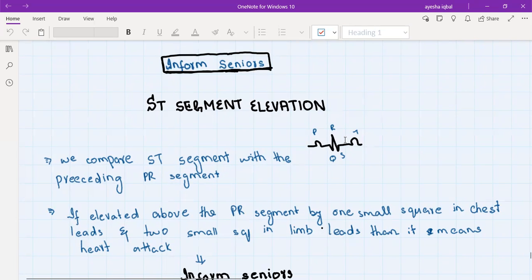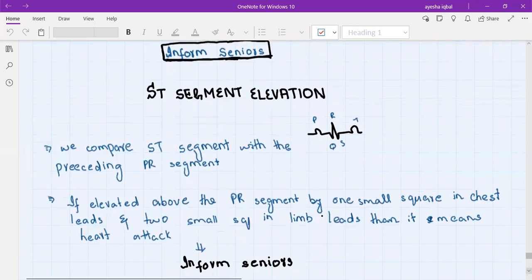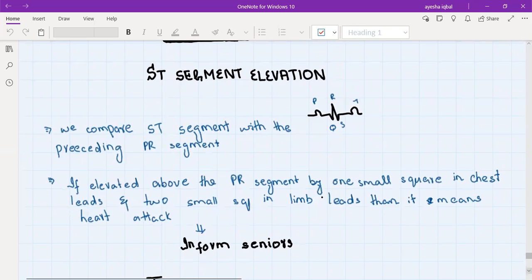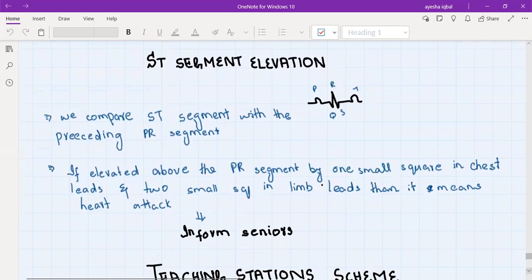If the ST segment is above the PR segment by two small squares in the limb lead and one small square in the chest lead, then it means that the patient is having a heart attack and we need to inform our seniors. They will give the patient thrombolytics, and depending upon the patient situation they might get transferred to the cath lab to remove the blood clot. If it's not possible then they will give drugs that will burst this clot. And we give blood thinning medication and other medications to protect the heart.